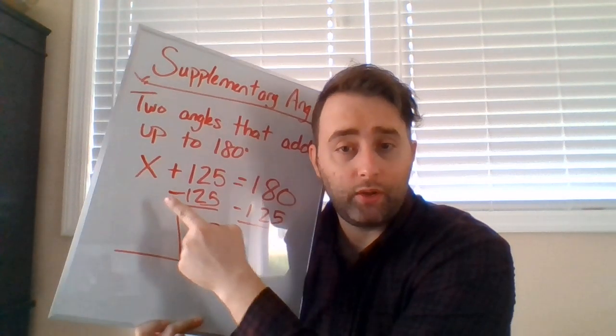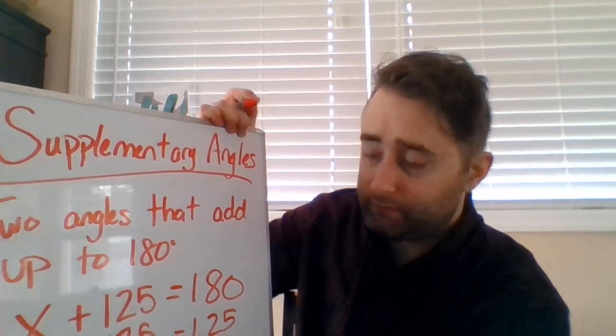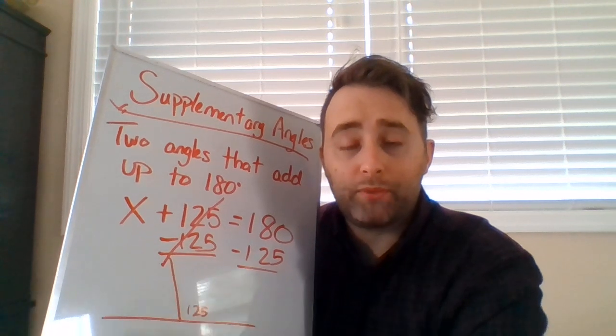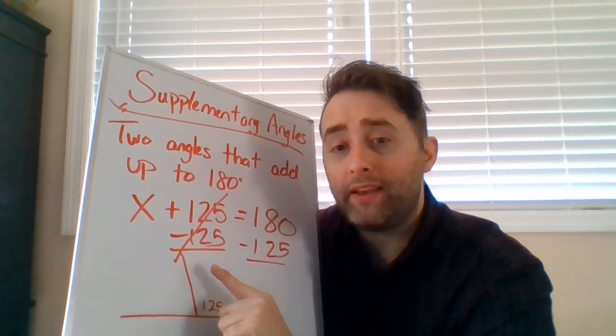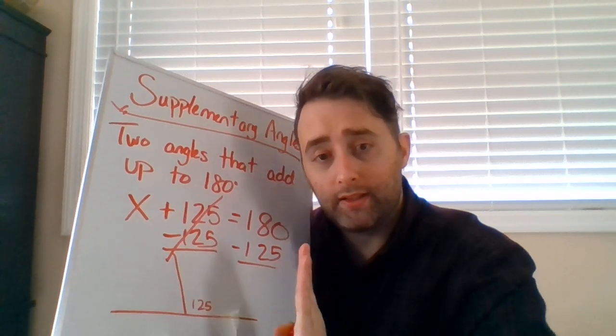So you do it to the left, you have to do it to the right. So when I add and subtract 125, that's a positive 125 and a negative 125. Those cancel each other out and send it to zero.